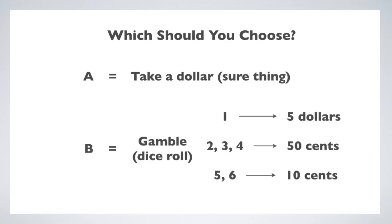If you take the dollar, that's a sure thing. If you roll the dice, you risk getting less than a dollar, but you also have a chance of getting more than a dollar. When you actually confront people with a choice like this, what usually happens is that you discover whether a person is a risk taker or a risk avoider. People who are attracted by the potential for a bigger payout will opt to roll the dice; people more drawn to a sure thing will take the dollar. Almost no one performs a calculation in their head — but that's what we're going to do. We're going to work out the expected value of that gamble, first doing the calculation, then talking about what it really means.